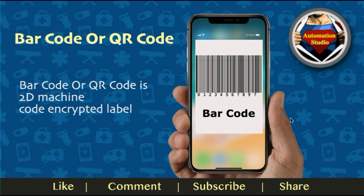A barcode or QR code is a 2D machine-code encrypted label. Generally, the barcode or QR code is just a 2D image in encrypted form — the information is stored in a pictorial manner. It was designed in 1994 by an automobile company in Japan and is now widely used in apps. For example, if you are purchasing a ticket, it will generate a QR code or barcode as a token.